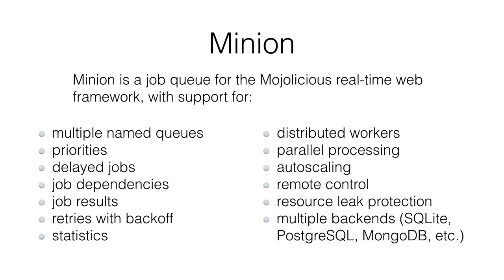Bonus material: Minion is not part of the Mojolicious framework but is a sister project that uses a lot of the Mojolicious toolkit. It's a job queue for real-time web. If you have slow work like fulfilling product orders or talking to a slow website and you don't want the customer to wait, you put a job in a queue — this is that job queue.